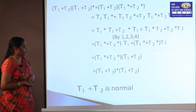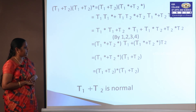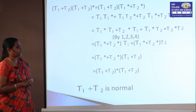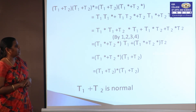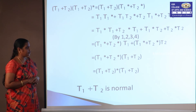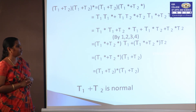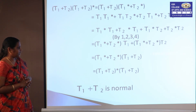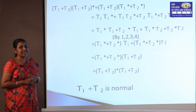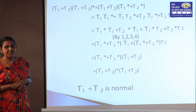Factoring, the first two terms share T₁ and the last two share T₂, giving (T₁* + T₂*)T₁ + (T₁* + T₂*)T₂. Taking T₁* + T₂* as a common factor yields (T₁* + T₂*)(T₁ + T₂), which equals (T₁ + T₂)*(T₁ + T₂). Therefore T₁ + T₂ is a normal operator.